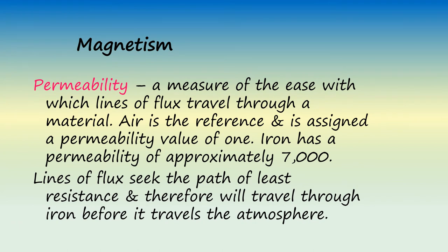Permeability is a measure of how easily lines of flux travel through a material. Air is the reference and is assigned a permeability value of 1. Iron has a permeability of approximately 7,000, which means that lines of flux travel through iron 7,000 times more readily than they do through air. Lines of flux seek the path of least resistance and therefore will travel through iron before traveling through the atmosphere.